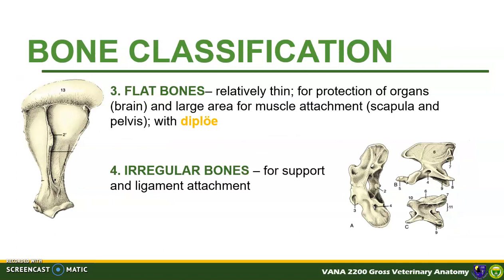Flat bones are relatively thin, designed for the protection of organs like the brain, and for muscle attachment in the case of the scapula and pelvis. They have two plates of compact bone with a spongy bone in between. These bones have no marrow cavity but have small irregular marrow spaces. The flat bones of the cranium consist of outer and inner tables of compact bone and an intermediate uniting spongy bone called diploe. Irregular bones are all the irregularly shaped bones, such as the vertebrae and some skull bones; they are primarily for support and ligament attachment.